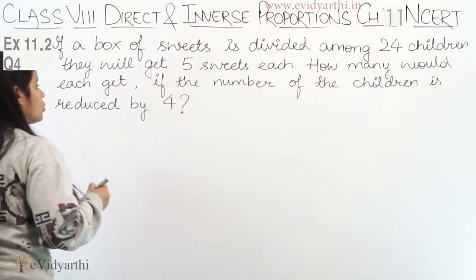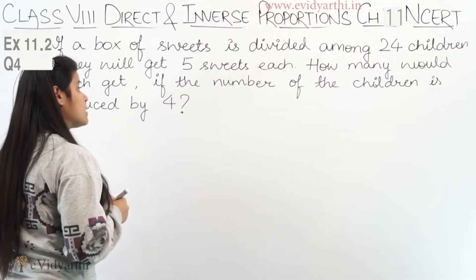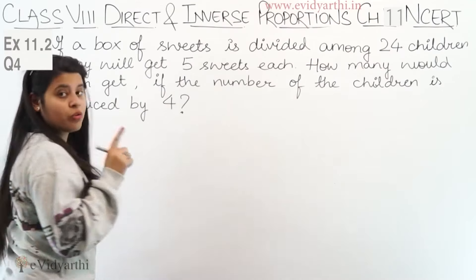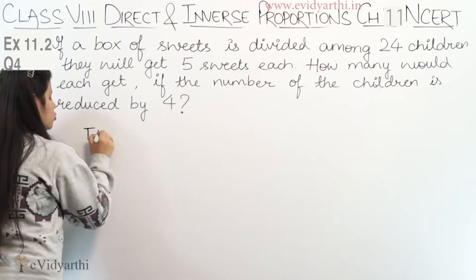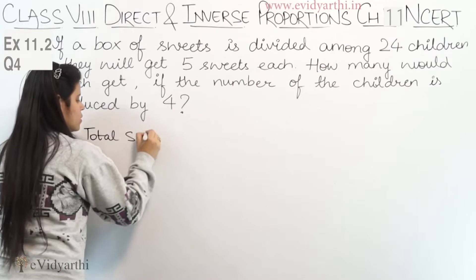First of all, what we will do is find the total sweets. The sweets are 24 children having 5 each, so we can find total sweets.